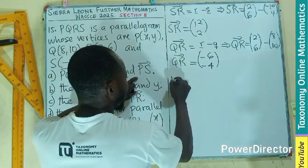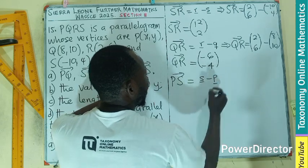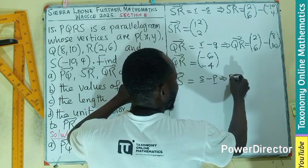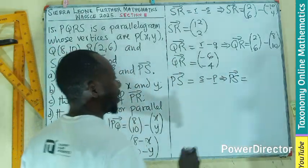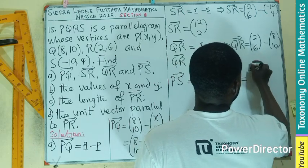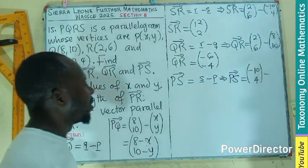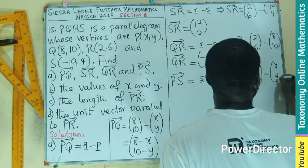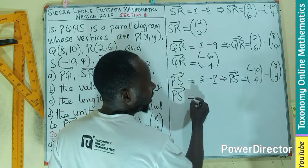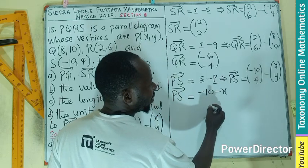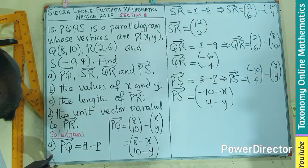The last one will be PS, which is going to be vector S minus vector P. So PS will become position vector S, (-10, 4), minus P, which is (X, Y). So PS will be (-10 - X, 4 - Y). This answered the first part of the question.